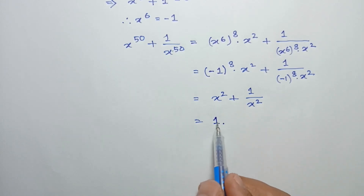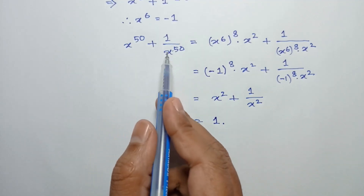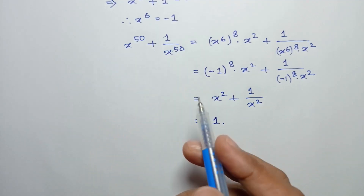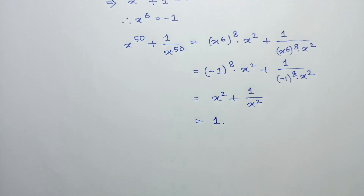So the value of x to the power 50 plus 1 over x to the power 50 is 1. If you like this video, please subscribe to my channel. Thanks for watching.